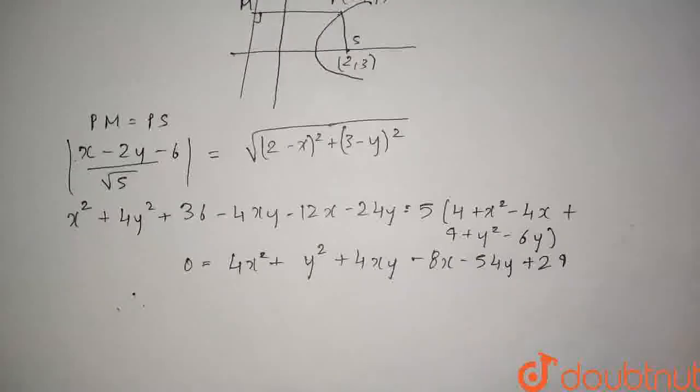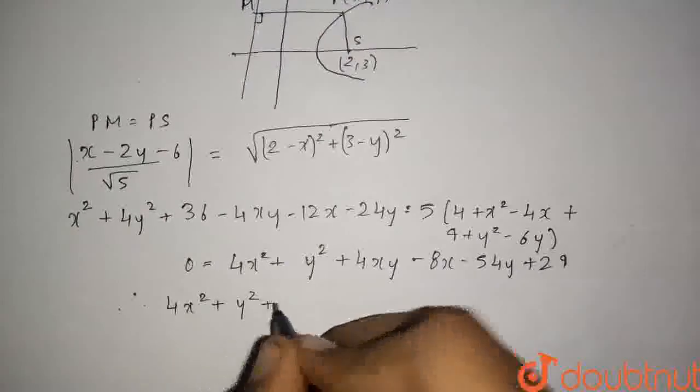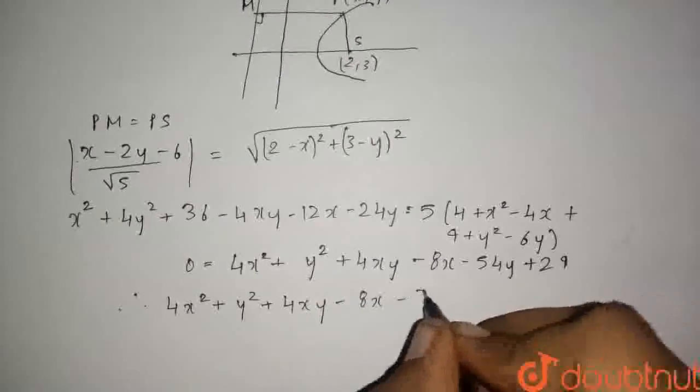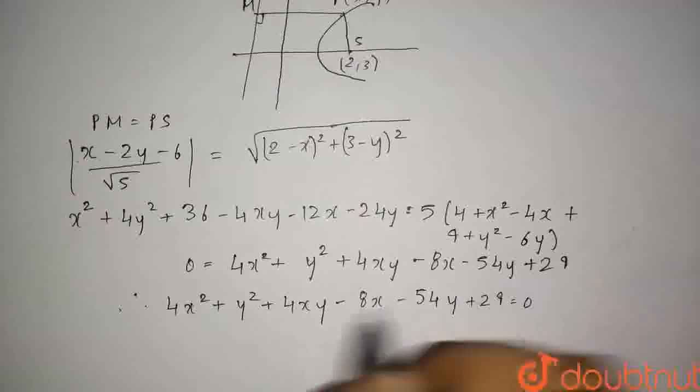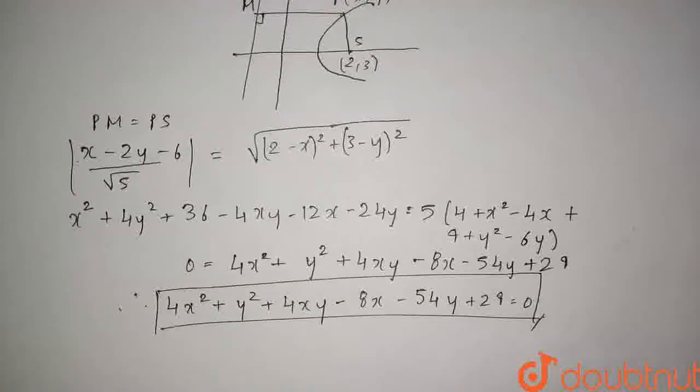Therefore, the final equation of the parabola will be 4x² + y² + 4xy - 8x - 54y + 29 = 0. This will be the final answer for this question. Thank you so much.